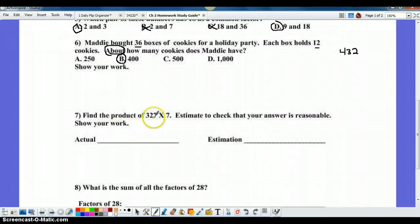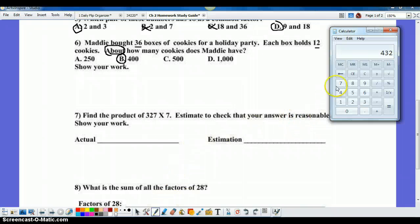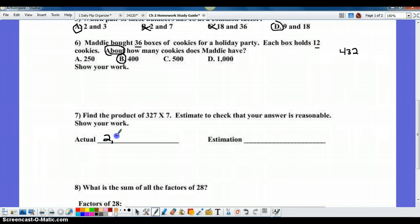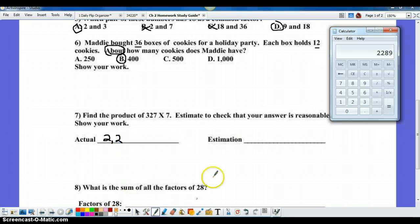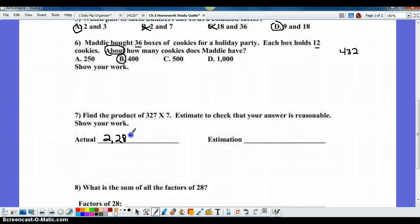Number 7. Find the product when you multiply 327 by 7. Estimate to check and see if your answer is reasonable. Pull out your handy-dandy calculator. Multiply 327 times 7. You get 2,289. But my estimation, I need to underline the number I'm estimating, circle the number to the right. If it's 4 or below, I leave the 3 go. Everything else becomes a 0. And I multiply that by 7. That's going to give me an answer of 2,100. And yes, my answer is reasonable.